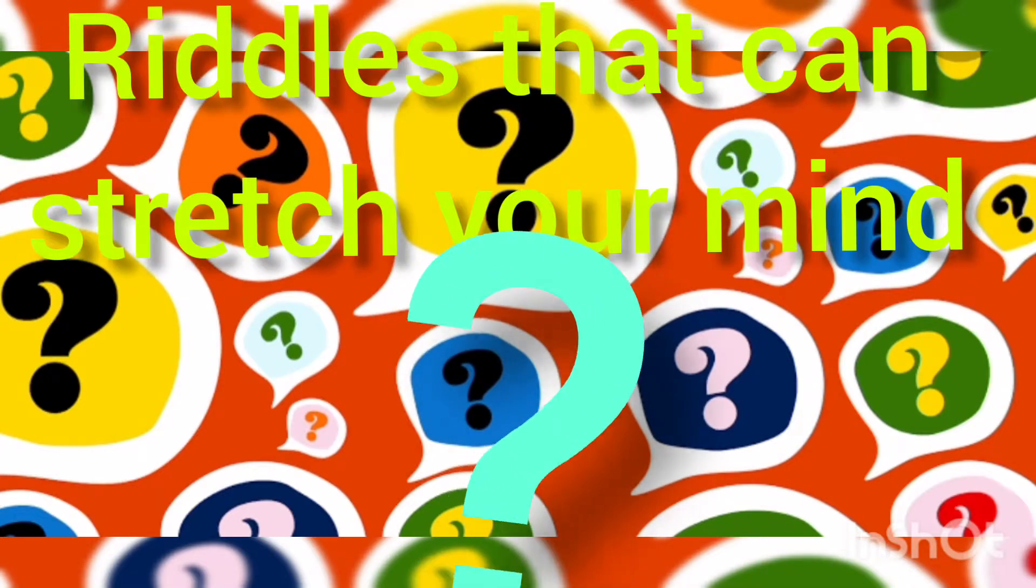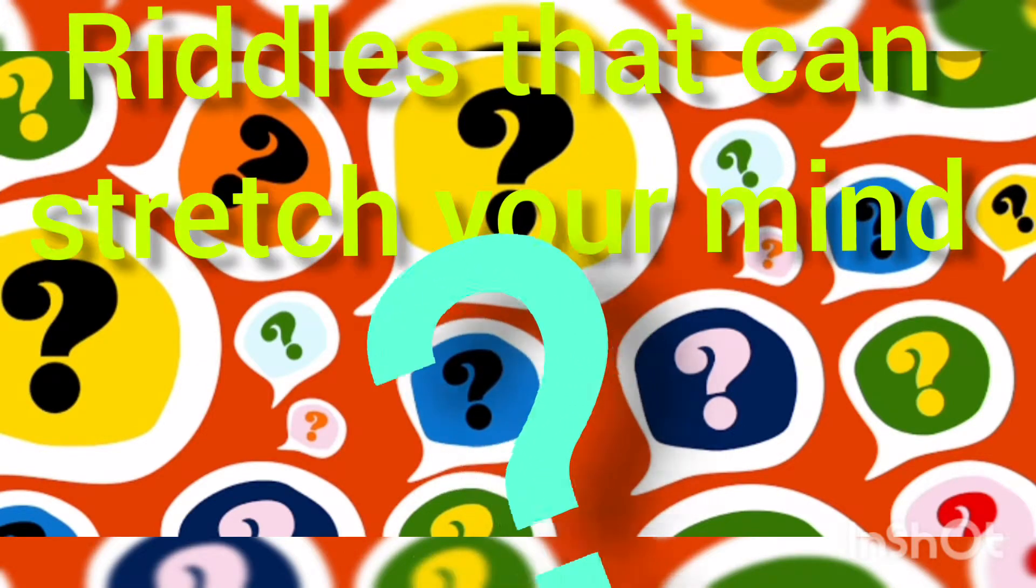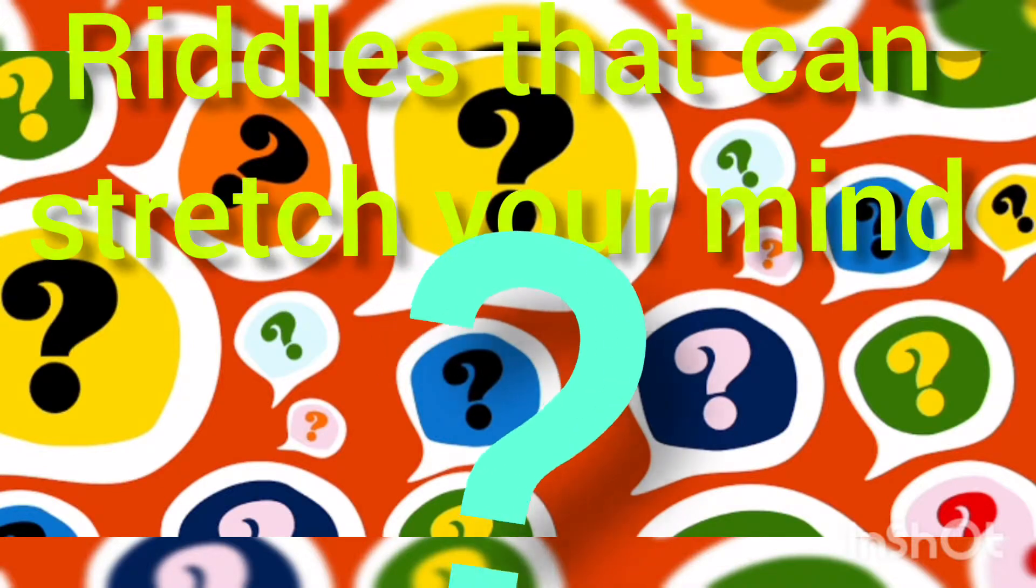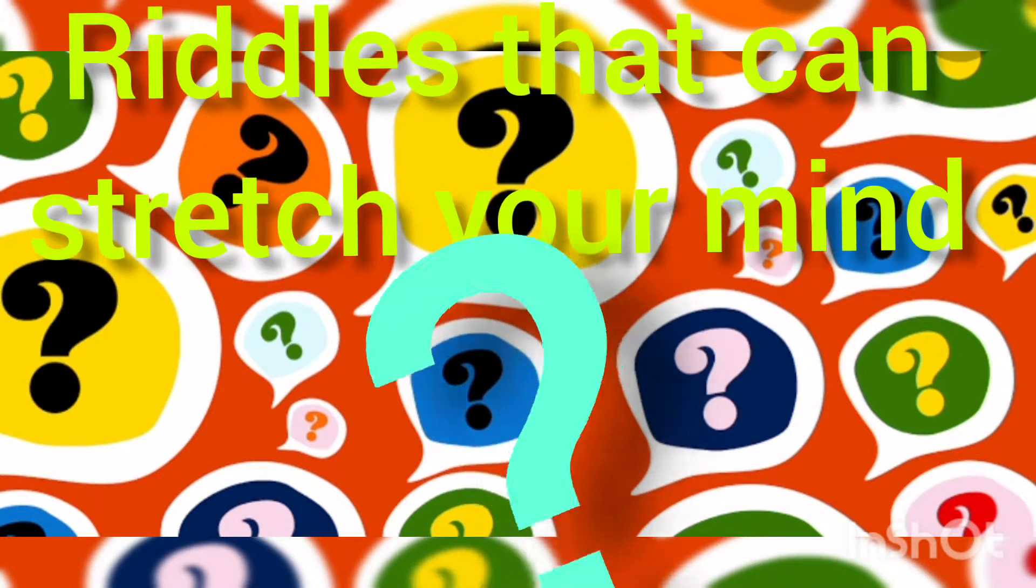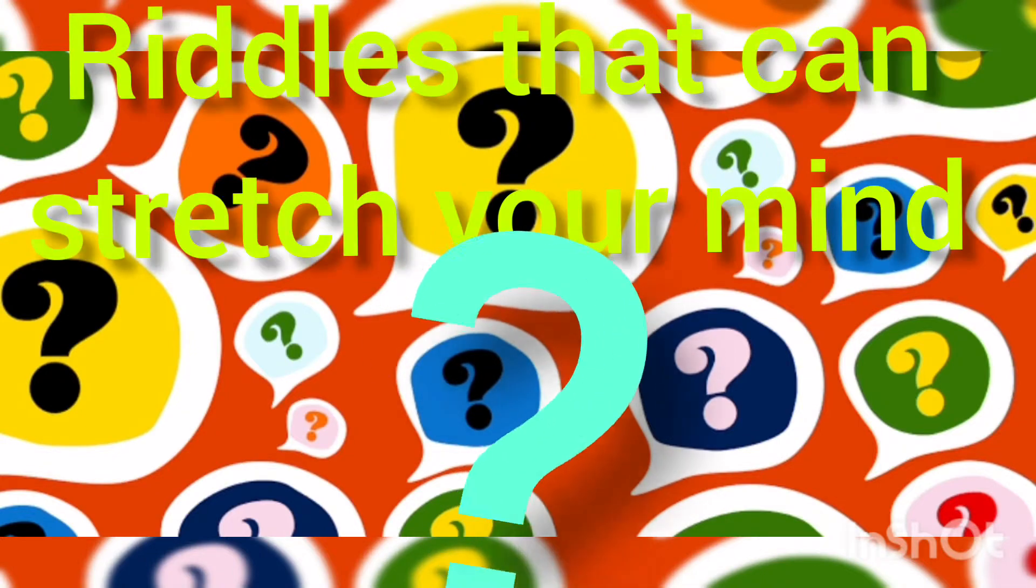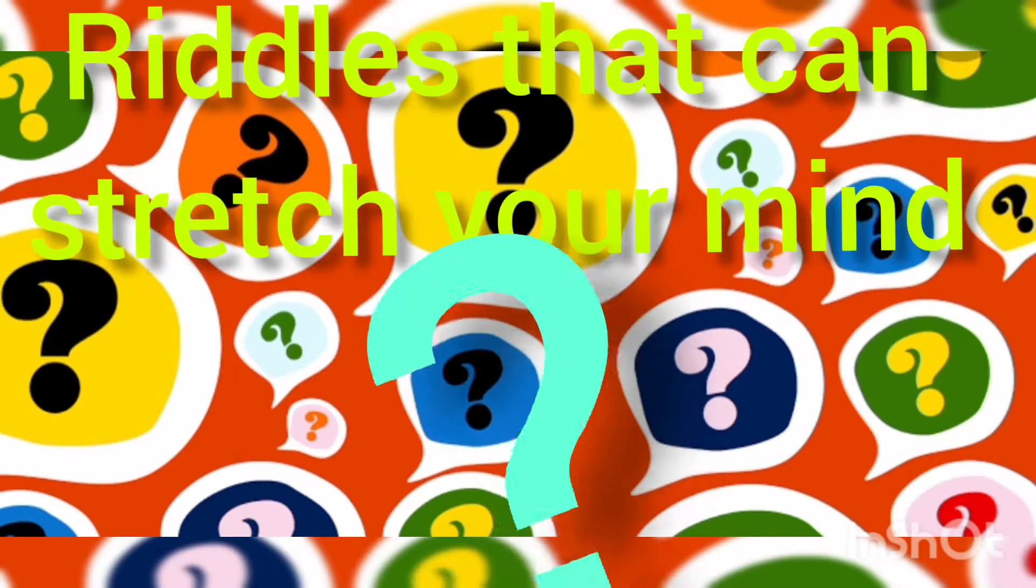Let me tell you the answer now. The word wrong is the only word that is spelled W-R-O-N-G. Okay, now let me go to the second riddle.